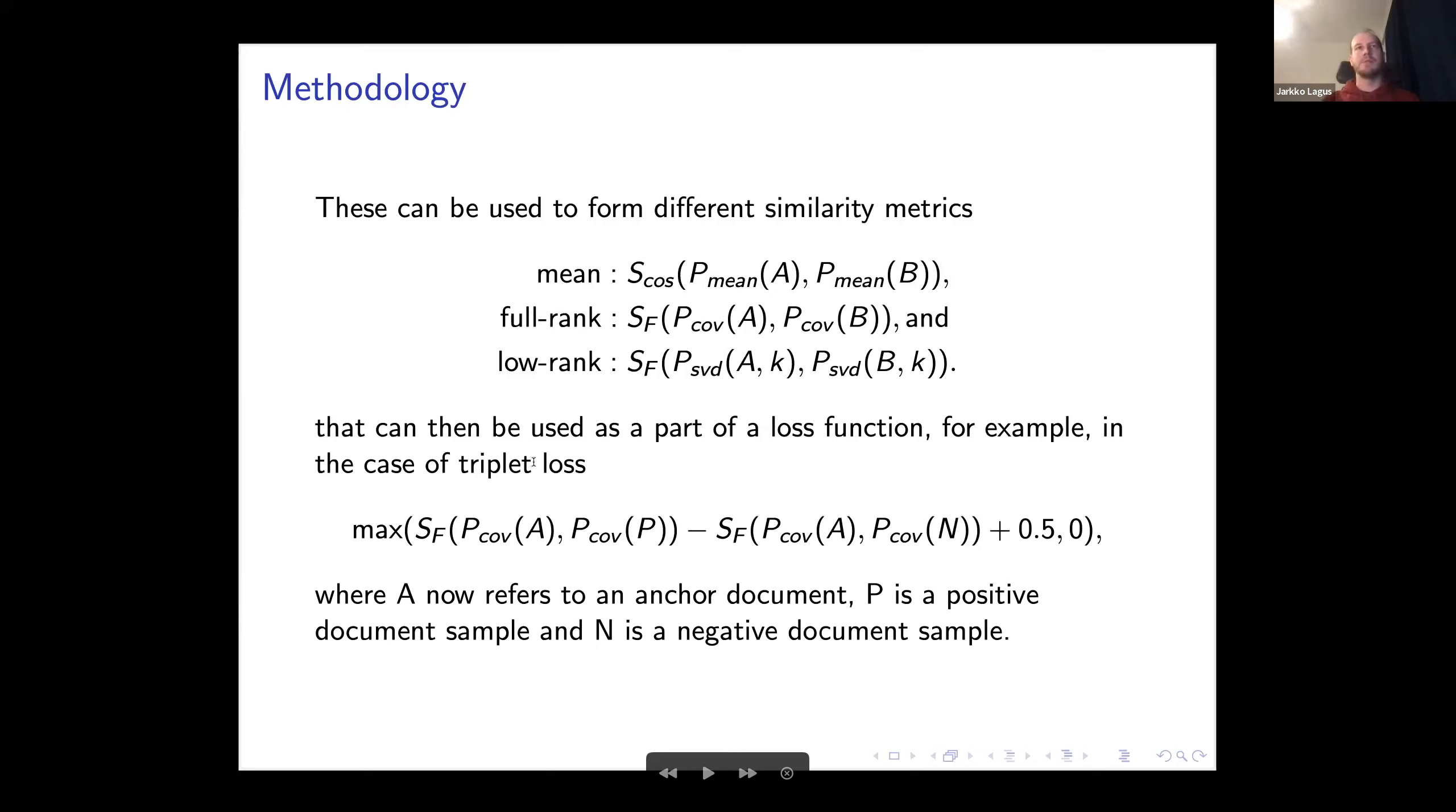These can be now used as input or as part of the triplet loss. The idea is that this is just the distance between A and P, which is the anchor and the positive sample, minus the anchor and the negative sample, plus some margin, here 0.5.